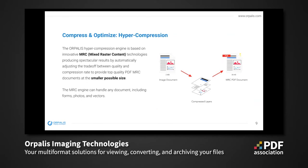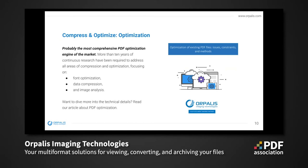Our hyper compression engine is based on mixed raster content technologies, producing spectacular results by automatically adjusting the trade-off between quality and compression rate to provide top quality PDF documents at the smallest possible size. The MRC engine can handle any document including forms, photos, and vectors. We spent more than 10 years of continuous research addressing all areas of compression and optimization like font optimization, data compression, and image analysis. A link to our article on the optimization engine is provided in the handout.